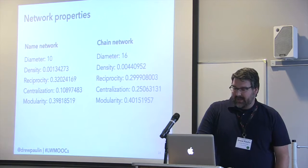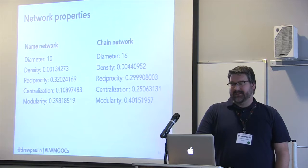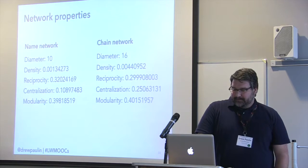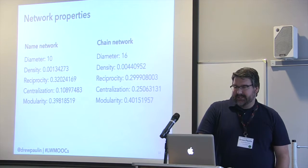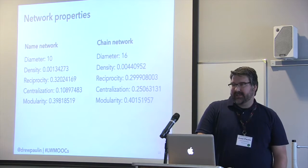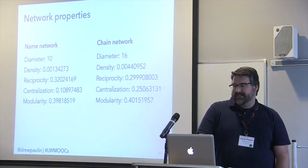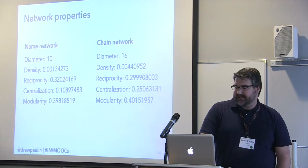Looking at the network properties for the water MOOC: the diameter, or longest path between any two nodes, is 10 and 16 — not very wide, so it's highly connected. The chain network is three times more dense than the name network, but importantly both have less than 1% of possible connections, which we can attribute to the high number of island nodes — those who posted once and dropped out.